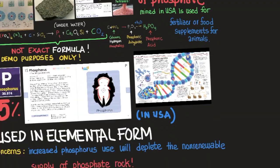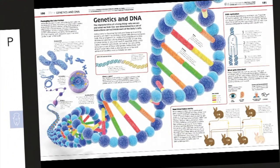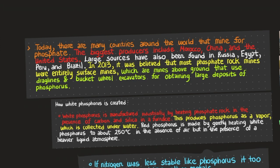So genetics and DNA: the characteristics of a living thing — who we are and what we look like — are determined by a set of instructions carried inside each of the body's cells. Instructions for building the body and keeping it working properly are held in a substance called DNA. The arrangement of chemical building blocks in DNA determines whether a living thing grows into an oak tree, a human being, or any other kind of organism. DNA is also copied whenever cells divide, so that all cells of the body carry a set of vital genetic instructions. Half of each organism's DNA is also passed to the next generation in either male or female sex cells.